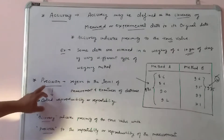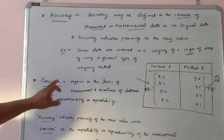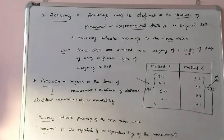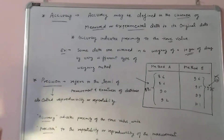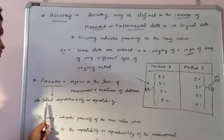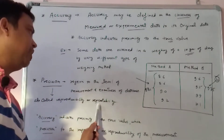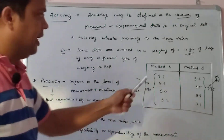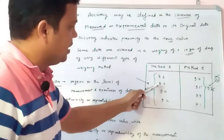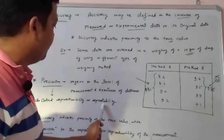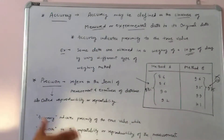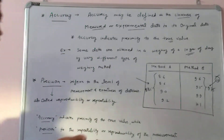Next is precision. Precision means the precise value. It refers to the level of measurement and the exactness of the data. Precision is also called repeatability and reproducibility. Looking at Method A — values 8.6, 8.6, 9.2, 9.2 — some values are repeated twice. The data which repeats is closer in value. Precision is related to repeatability and reproducibility.